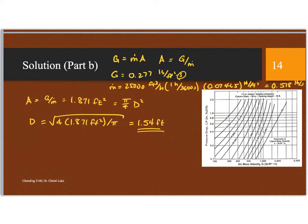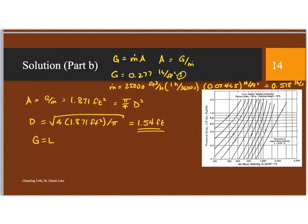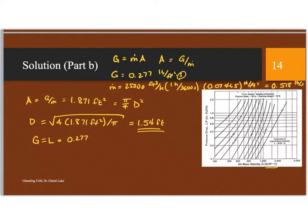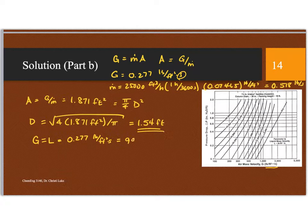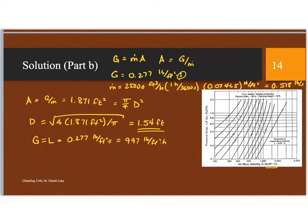Now, we also know that G, which is 0.277 pounds per square foot per second, is also what I'm going to use for L. Right? G is equal to L. They describe that in the problem statement. And I can use the graph to figure out what the delta P is. So now we've switched to another graph. So G and L, the units here are specified in pounds per foot square per hour. So instead of 0.277 pounds per foot square per second, this is 997 pounds per foot square per hour.